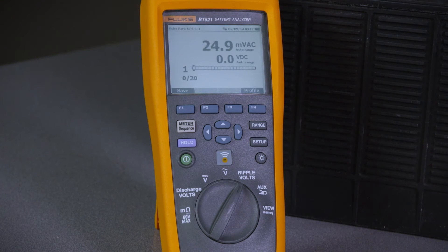Ripple voltage is measured when the batteries are in a charging state and indicates how much ripple there is on a power supply. The more ripple you see, the more potential there is for the battery to be damaged.